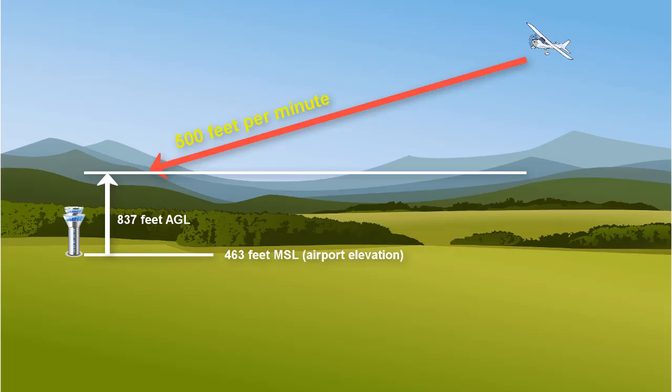However, we will land on runway 08 left, so this is a pattern altitude of 837 feet AGL, and when added to 463 feet equals 1300 feet.